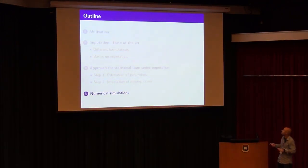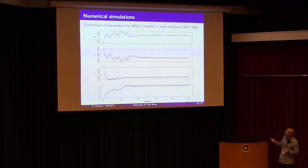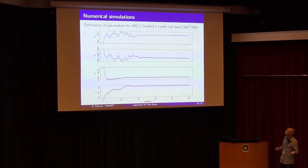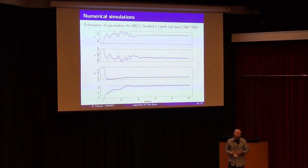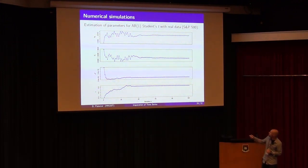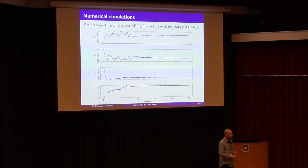I want to show some numerical results. I took real SP500 data and fit it with the Student T AR(1) model with four parameters. The procedure converges very quickly — pretty much 40 iterations. We know that log prices follow a random walk, so psi_1 should be close to 1. Indeed, it quickly converges to approximately 0.9988. And nu converges to around 5 — definitely heavy tail. So it is good that we are assuming a heavy-tail distribution.